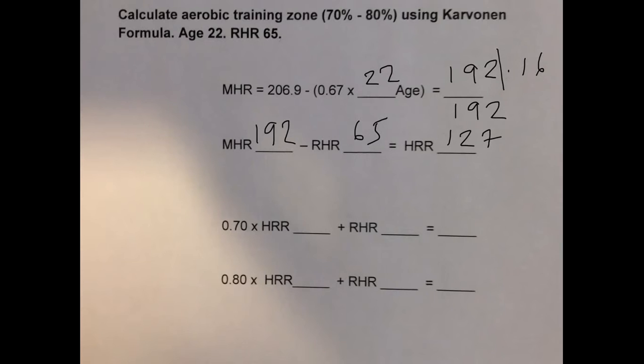Then using the training zone, for example in this case the aerobic zone of 70 to 80% the maximum heart rate required, we can work out the upper and lower limits. Remember 70% is the same as 70 over 100, which is 0.7 or 0.70.